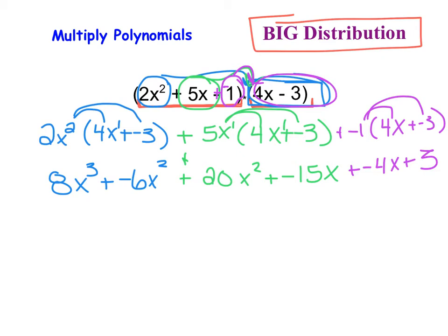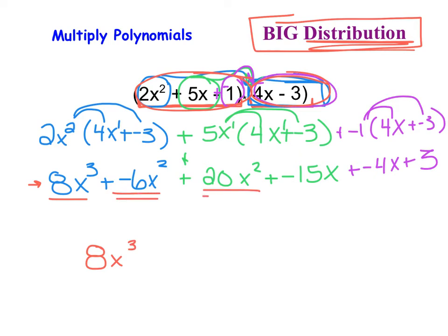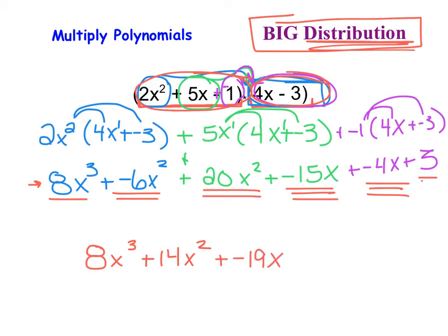I've performed the distributive property on a large scale — I took everything in the first polynomial and multiplied it by every term in the second polynomial. Now I simplify by looking for like terms. Starting with the highest degree, x to the third: there are no more, so I write 8x to the third. Then I look for x squareds: I have negative 6 plus 20, which leaves me with plus 14x squared. For terms containing x: negative 15x and negative 4x combine to be negative 19x. And at the end I'm left with the constant plus 3.